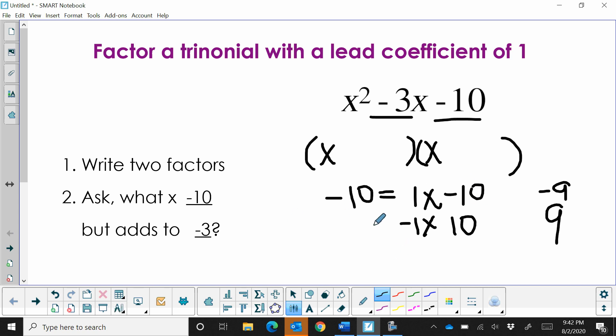The only other way 10 factors would be a 2 and a 5. So let's try 2 times negative 5. That does multiply to negative 10. And when we add that together, we get negative 3. So negative 5 and 2 are our two factors.